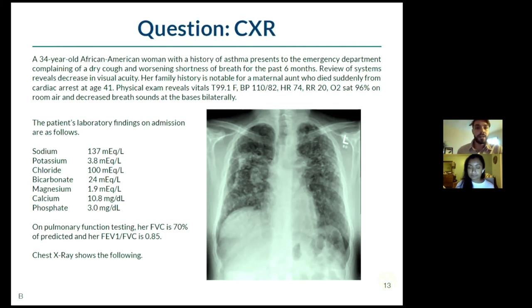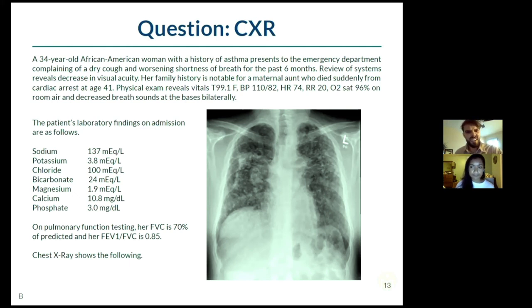I think this is sarcoid. Then I look at the image and ask: can I see bilateral hilar lymphadenopathy? I can convince myself of that. I use mental gymnastics to confirm what I already thought of in my assessment, and that pattern is really helpful.